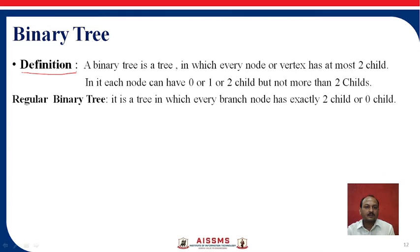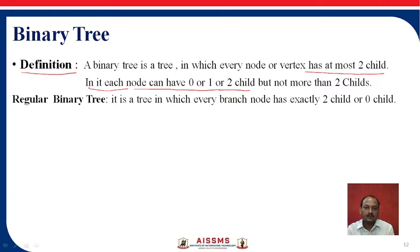The binary tree is a tree in which every node or vertex has at most 2 children. In the binary tree, each node can have 0, 1, or 2 children, but not more than 2 children.